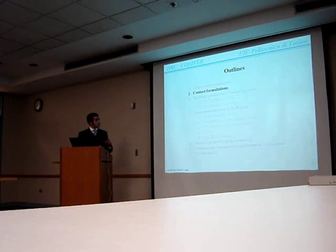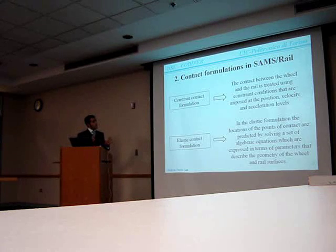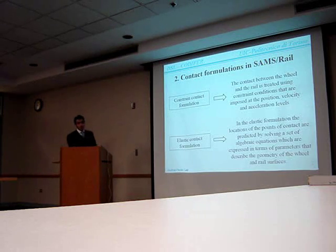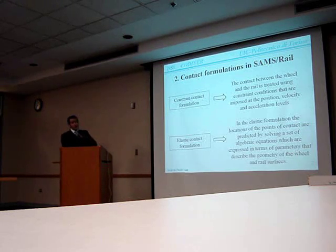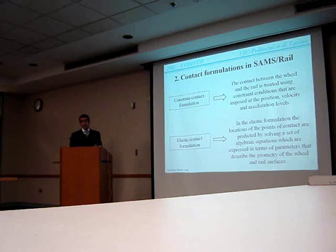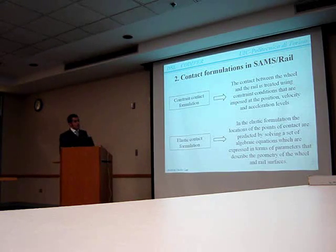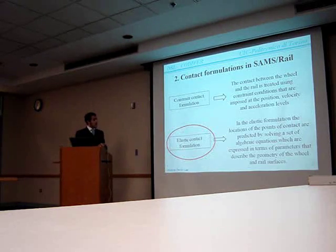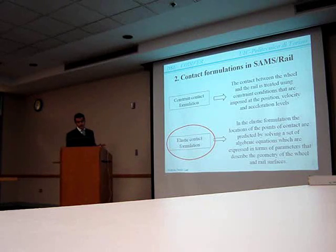The second part of this presentation will be devoted to explaining the two main groups of contact formulation used in SEMS rail. The first group is called the constrained contact formulation, where the contact between the wheel and the rail is treated using constraint conditions imposed in terms of position, acceleration, and velocities. The other group is called the elastic contact formulation, where the location of the contact point between wheel and rail is predicted by solving a set of algebraic equations expressed in terms of parameters describing the geometry of the wheel and rail surfaces. In this work, we used the elastic contact formulation.